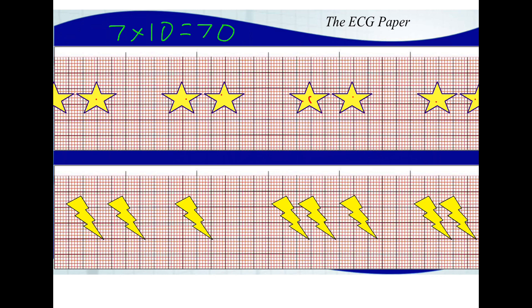Let's look at the bottom one: one, two, three, four, five, six, seven, eight lightning bolts. We would take that eight, multiply it by 10, and we get 80.